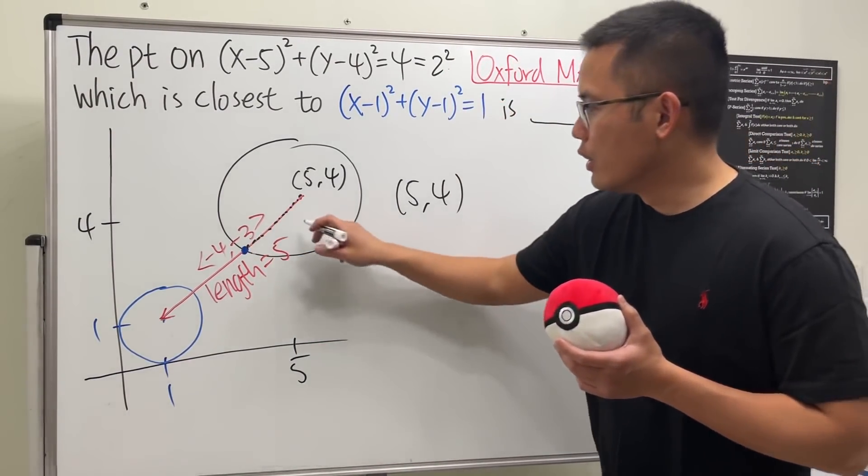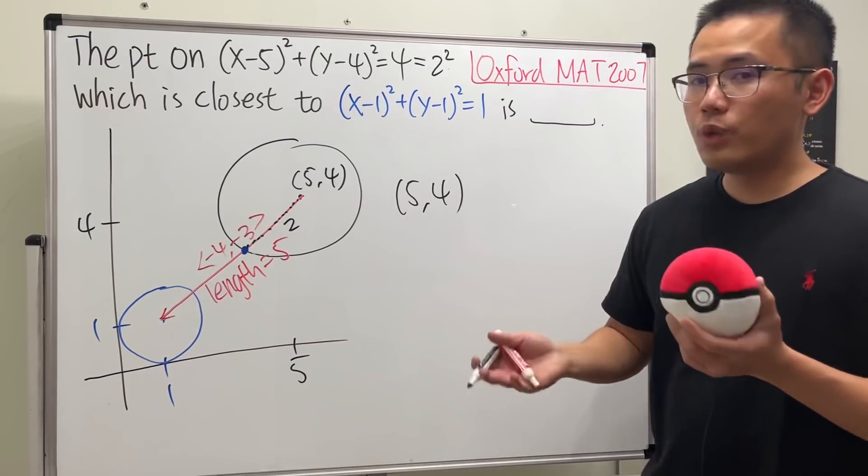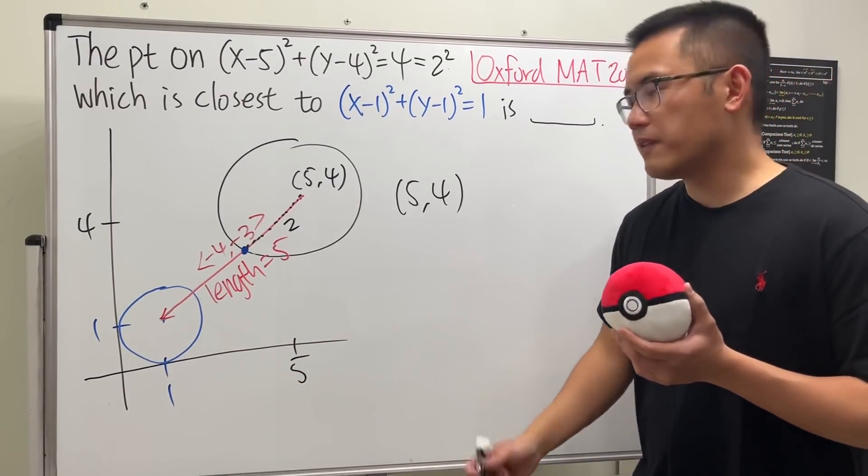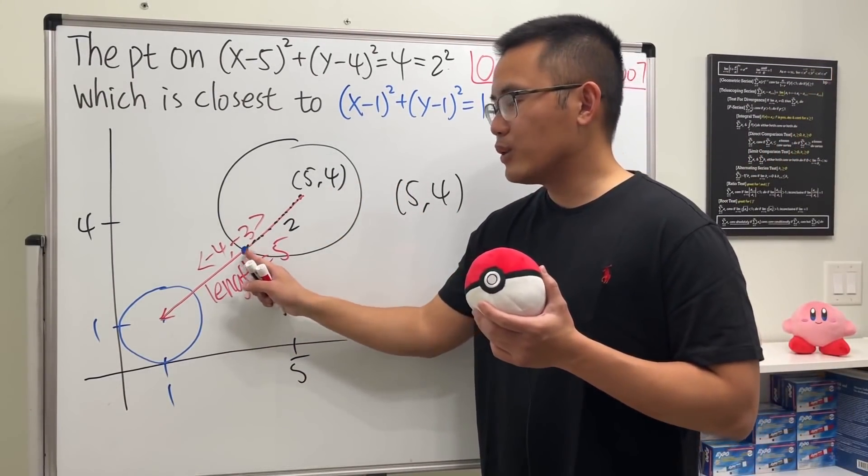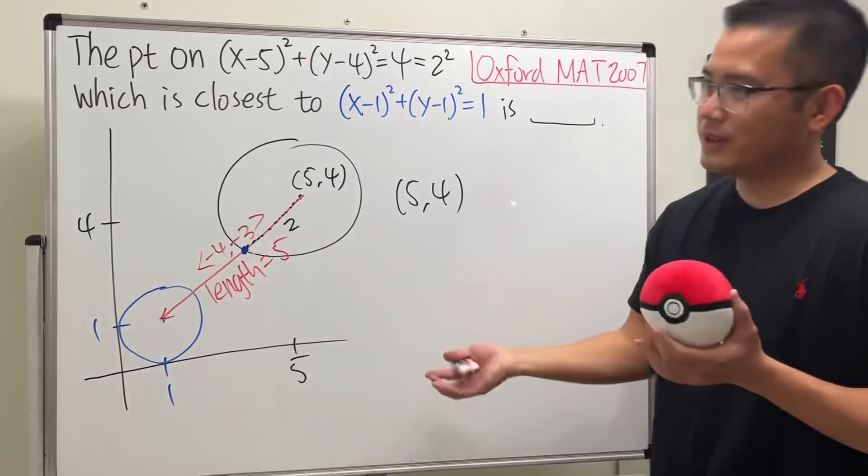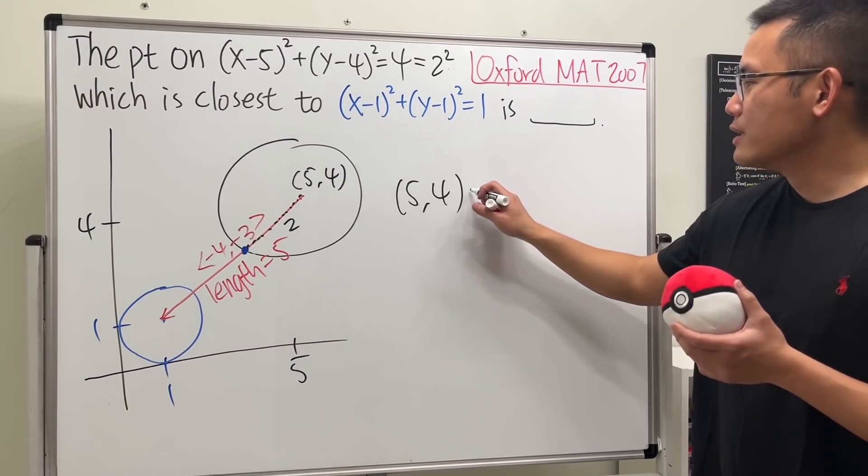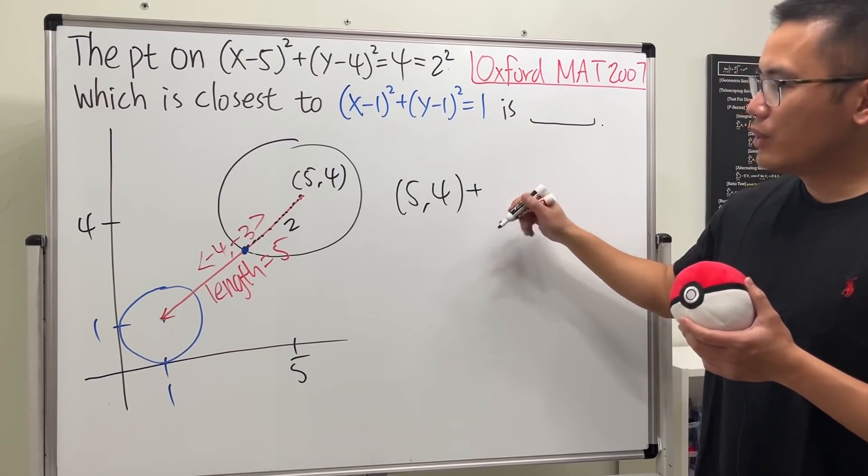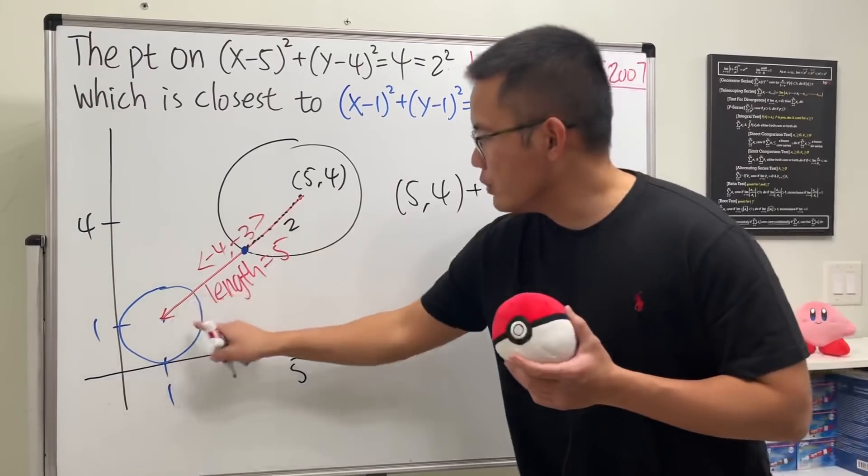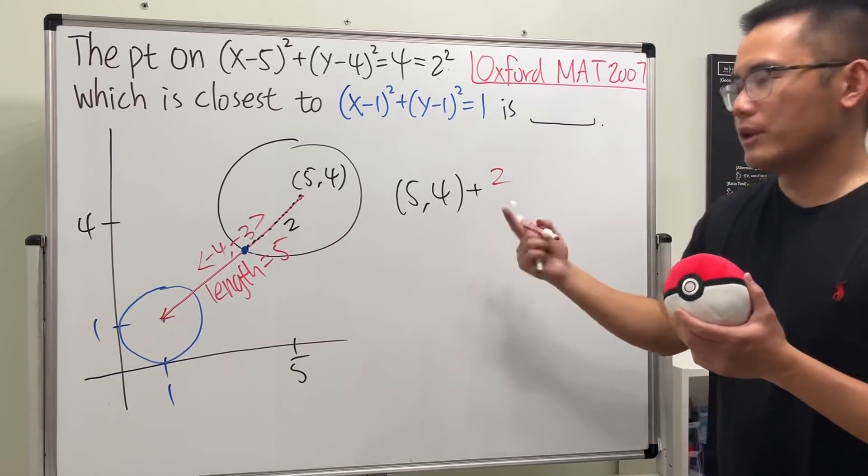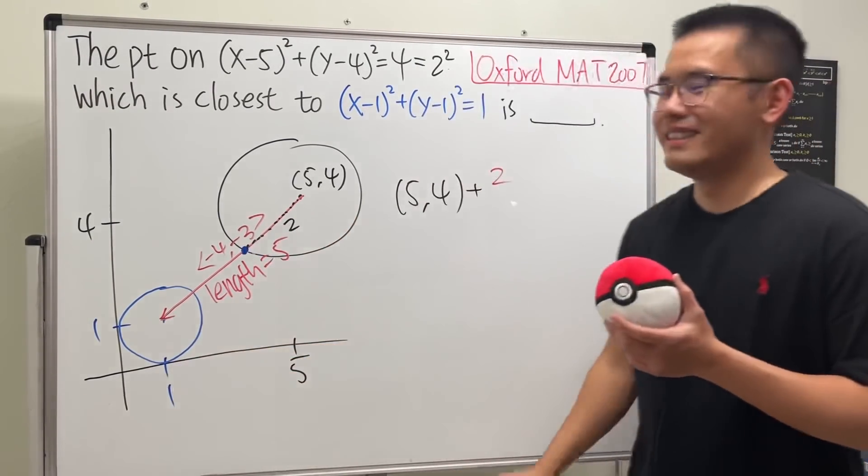You just want to travel from here to here, which is precisely the radius of the first circle, which is 2. So you just want to travel two-fifths of the distance so you can get to the edge of the circle.